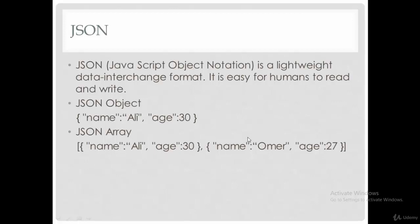Then comma, and another employee with name Omar and age 27. So this is called a JSON array. In this video we have talked about what is web API, what is JSON, what is JSON object and what is JSON array.